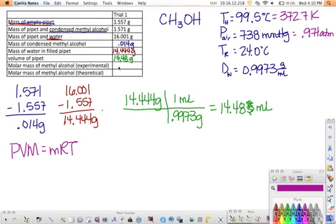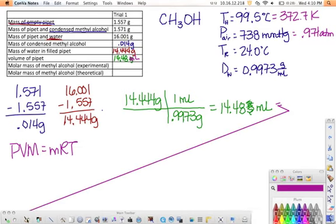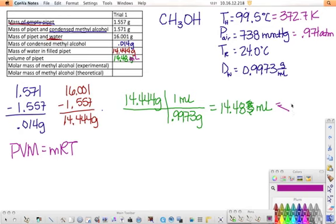Our volume of course does need to be in liters. So this gets converted to 0.01448 liters. All that I did was went one, two, three. So now I have all the information I need to be able to solve for molar mass.